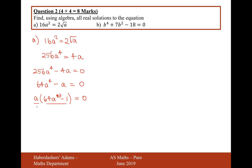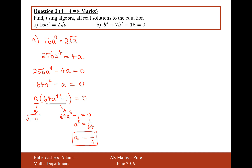Now we've got two expressions that multiply to make zero, so either the first expression equals 0 — giving a equals 0 — or the second expression equals 0. Let's move the 1 to the other side, divide by 64, and then cube root both sides. a is therefore going to equal 1 over 4. Not plus or minus 1 over 4, just 1 over 4, because there's no plus or minus when you're cubing something.